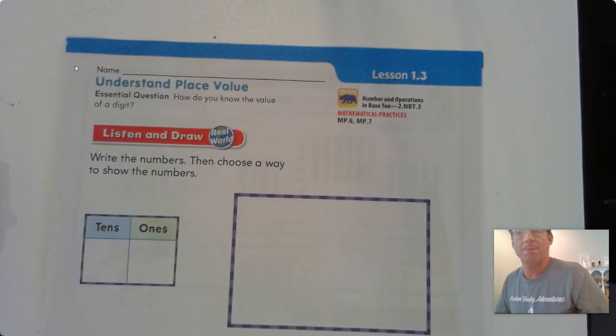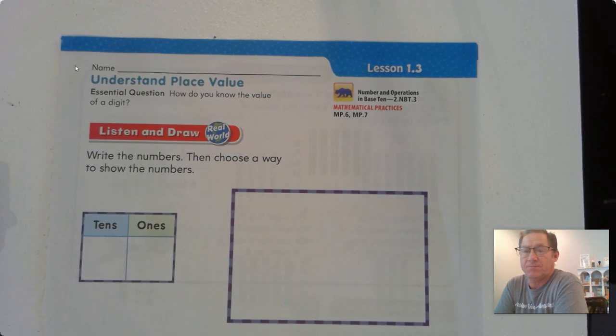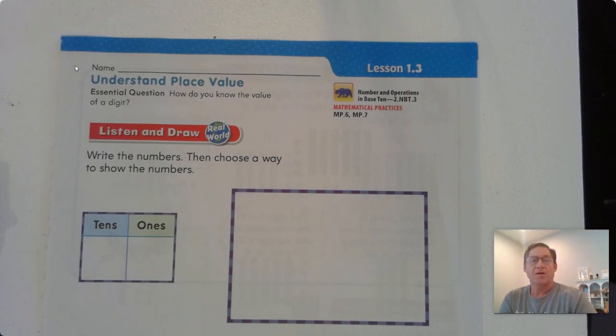Hello, everybody. We're going to continue with Chapter 1 in the 2nd Grade Go Math Textbook. We're on page 21. In today's lesson, we're going to start practicing and understanding place value. The essential question that you should be able to explain by the end of the lesson is, how do you know the value of a digit?